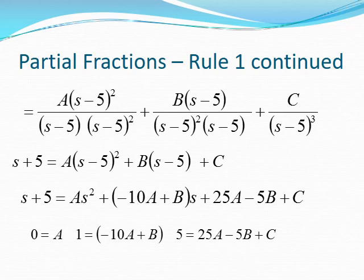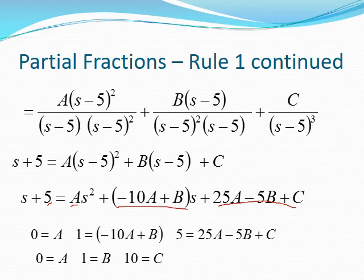Applying the coefficient-matching strategy: there is no s-squared term on one side, so A has to equal zero. The coefficient in front of s is one, so that equation equals one. The constant term has to be set equal to five. We have three equations and three unknowns, and solving gives us C equals 10, B equals 1, and A equals zero.